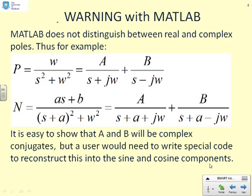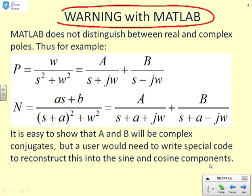First, however, a warning. When you're using MATLAB, it does not distinguish between real and complex poles. So if you have P equals W over s squared plus W squared, for example, and you try to use MATLAB to find the partial fractions, it will give you A over s plus jω plus B over s minus jω. That is, it won't recognize this as a quadratic factor, probably best left as a quadratic factor.